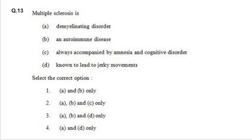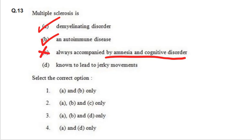Next. In multiple sclerosis, there is a demyelinating disorder — this statement is correct. It is an autoimmune disease — this statement is correct. It is always accompanied by amnesia and cognitive disorder — no, it is not necessary that amnesia and cognitive disorders accompany multiple sclerosis, so this statement is incorrect. There are also jerky movements involved. So A, B, and D are correct, and our answer is option 3.